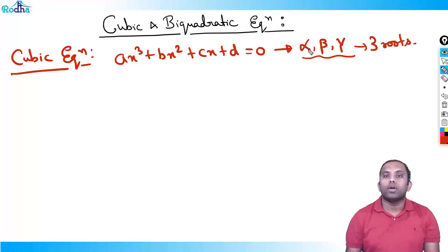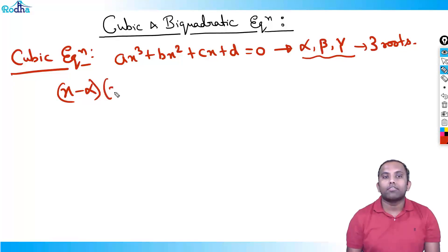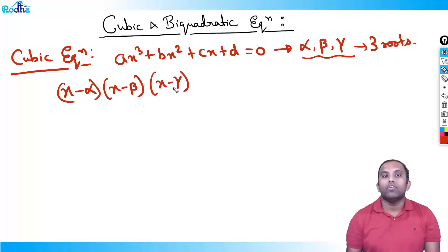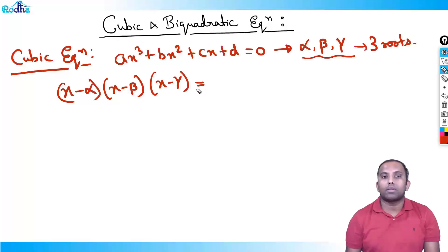If x = α is a root, then (x - α) is a factor of this equation. If x = β is a root, (x - β) is a factor. And if x = γ is a root, (x - γ) is a factor. So (x - α)(x - β)(x - γ) — this is the factor theorem, which we discussed earlier.